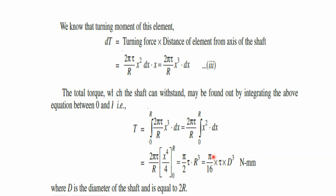The final equation for twisting moment of the shaft is T = π/16 × tau × d³ N·mm, where d is the diameter of the shaft and d = 2R. So the twisting moment in a solid shaft equals π/16 × tau × d³.